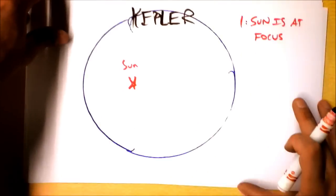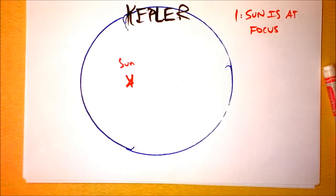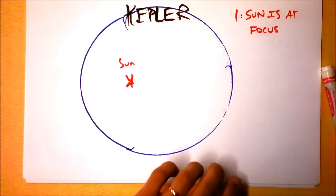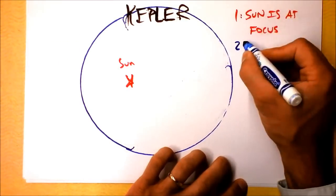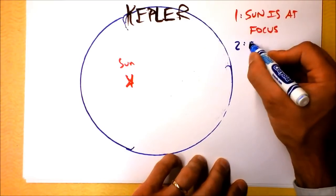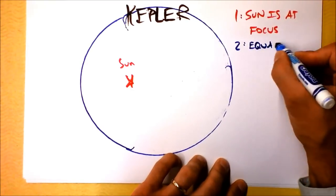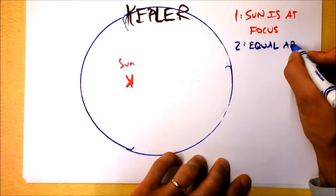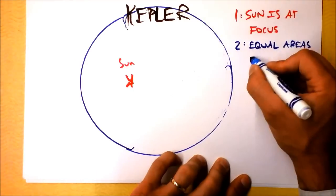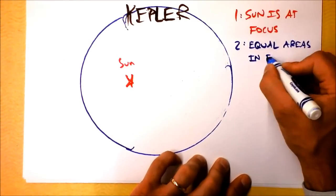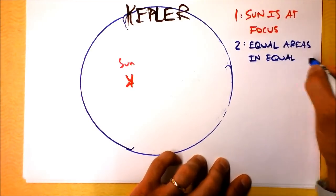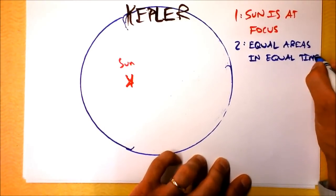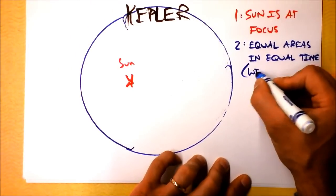And Kepler's second law is the law that I like to call the windshield wiper law. Kepler's second law says equal areas in equal time. And in parentheses, I'll call it the windshield.